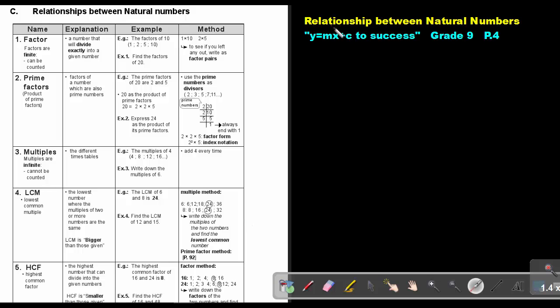Part 2. Relationship between natural numbers. You will find this on page 4 in the Namibia Mathematics Grade 9 textbook y equals mx plus c to success.